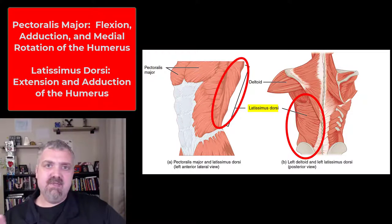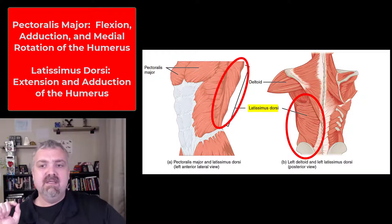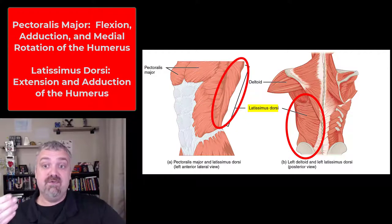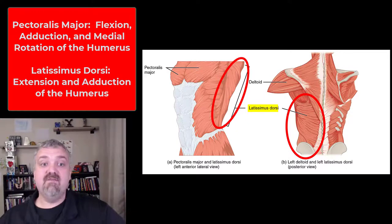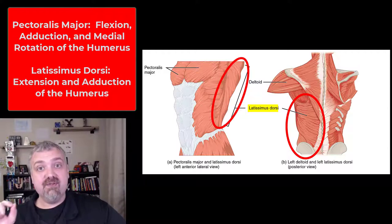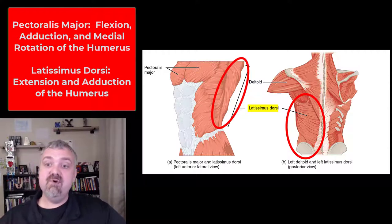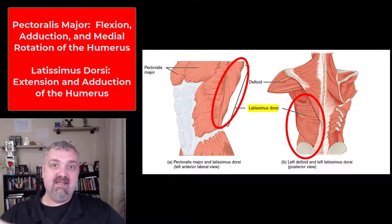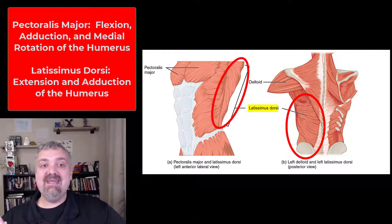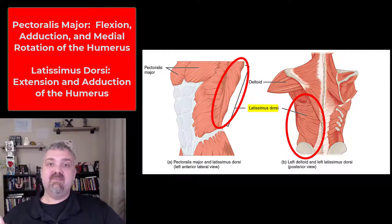There is a pectoralis minor, but you can't see it here. Latissimus dorsi basically means the broadest muscle on the dorsal surface — the broadest, largest muscle of your back. It's a huge muscle on your back, but it inserts on your humerus, so it moves the arm. It doesn't move the spine like the erector spinae muscles do.